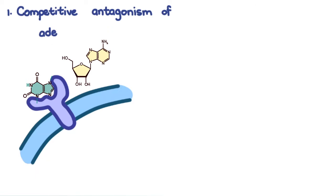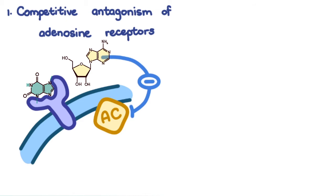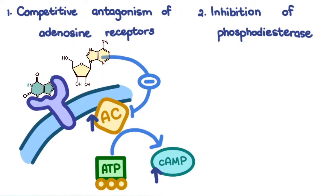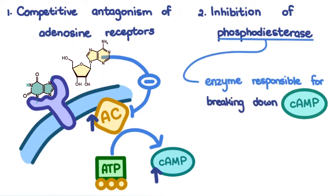When distributed throughout the body, methyl xanthines work through these main mechanisms of action. First is the competitive antagonism of adenosine receptors. Adenosine antagonizes adenylate cyclase, which is an enzyme that synthesizes cyclic AMP from ATP. So when adenosine can't bind to these receptors because theobromine and caffeine are blocking them, there'll be more adenylate cyclase and consequently more cyclic AMP. Methyl xanthines also inhibit phosphodiesterase, an enzyme responsible for breaking down cyclic AMP, so when that's inhibited, cyclic AMP is not broken down — so there'll be lots of it.